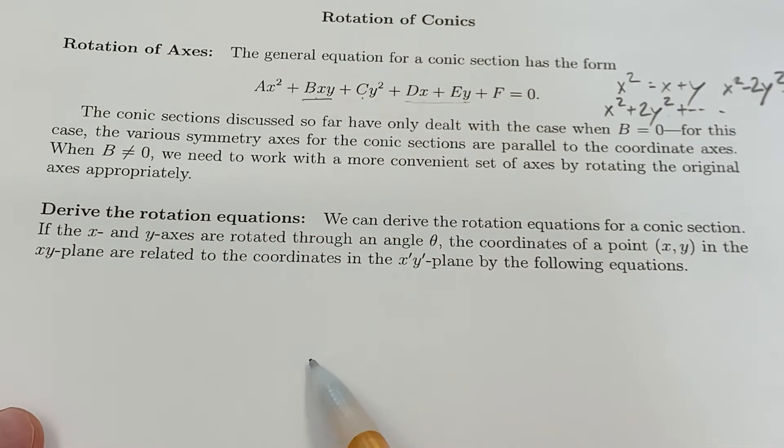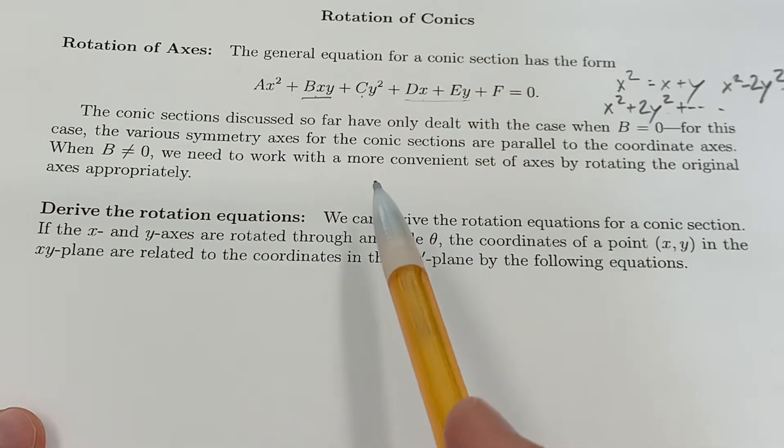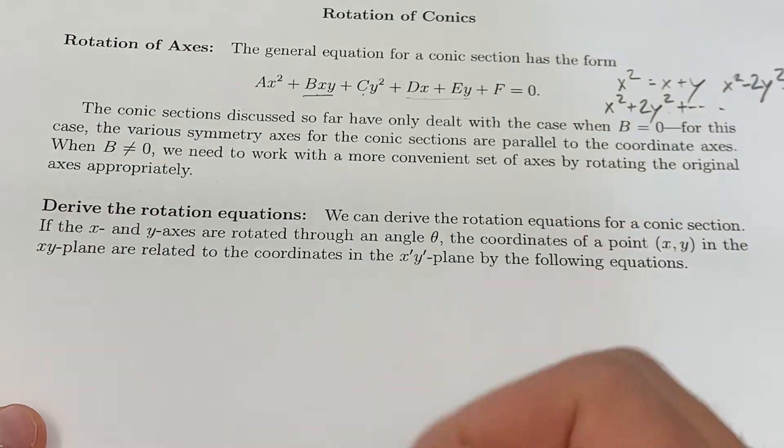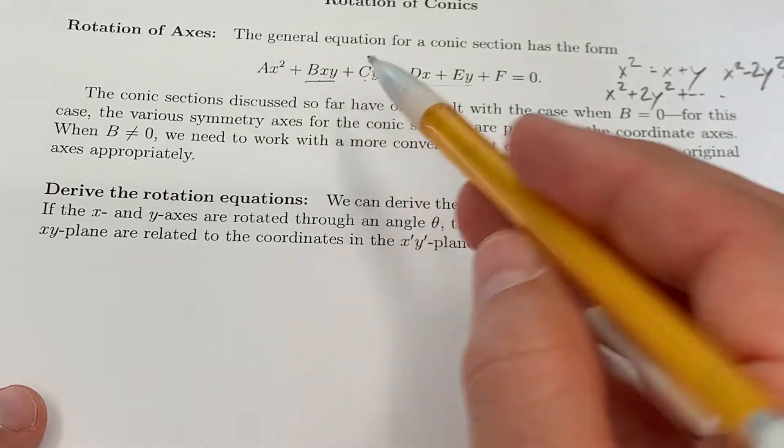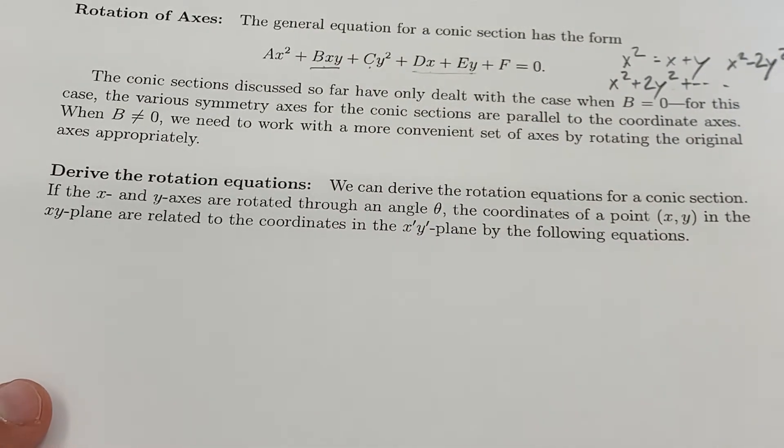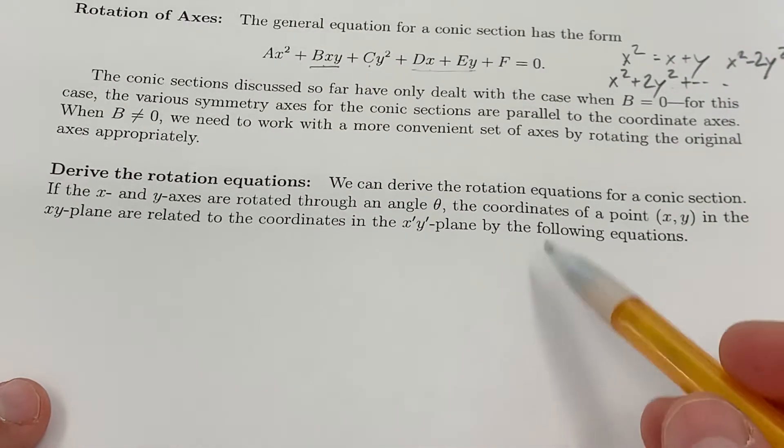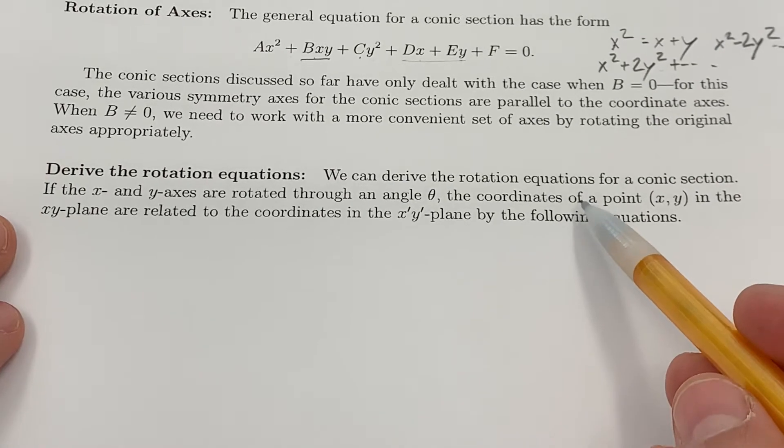When it's non-zero, we need to work with a more convenient set of axes by rotating the original axes appropriately. So what we're going to do to start with is derive rotation equations for a conic section.